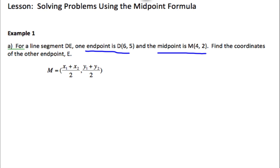So if we can imagine a line segment that looks like this. DE is the line segment and M is the midpoint. Remember, midpoint is halfway in the middle so that it divides the line segment in half.